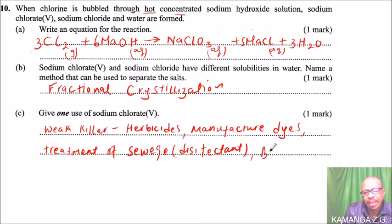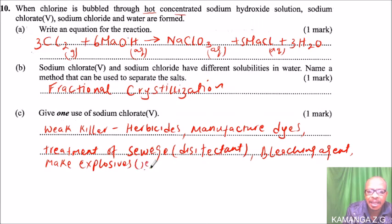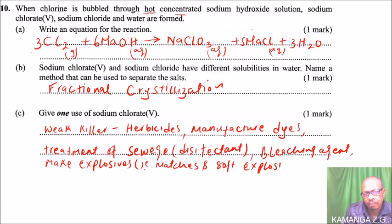Another use is that it can be used as a bleaching agent. It can also be used to make explosives — that is, matches and soft explosives. You are only required to state one, but it is good to know the several uses of sodium chlorate.